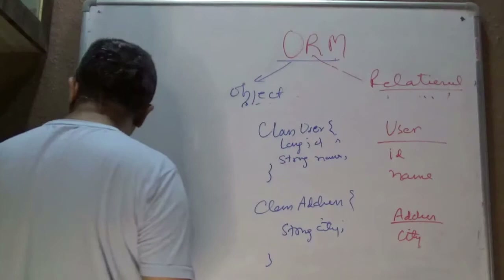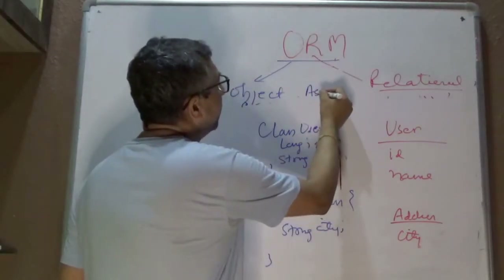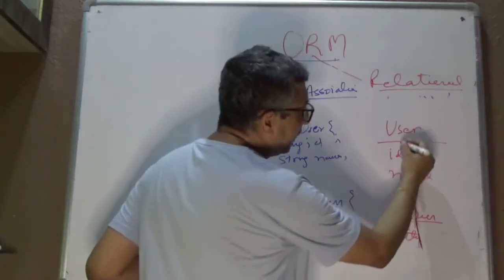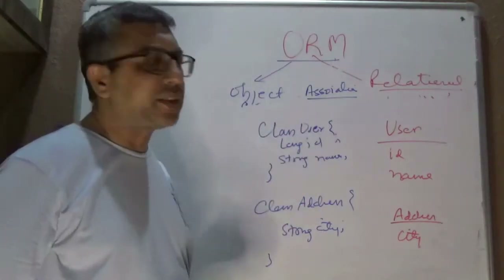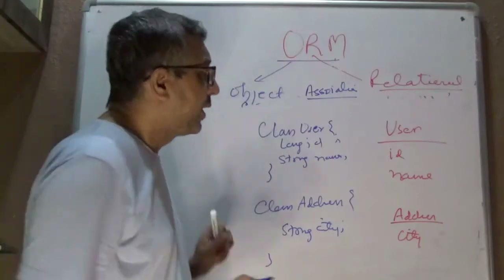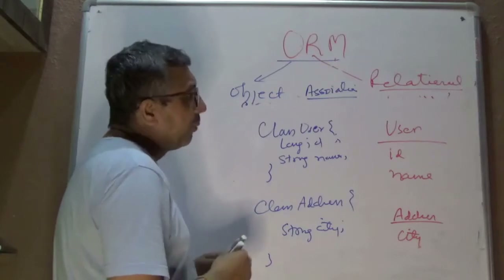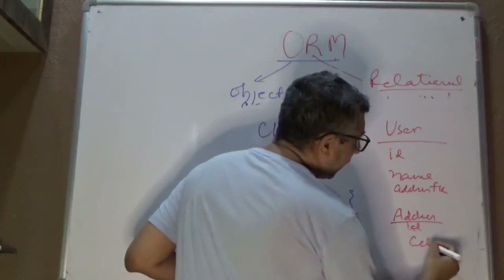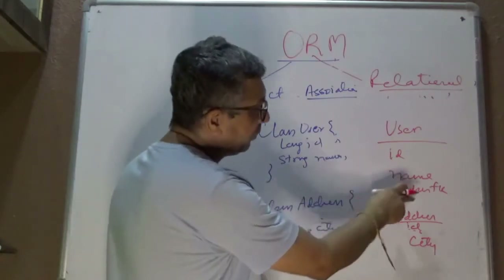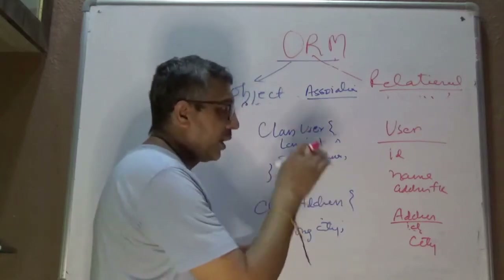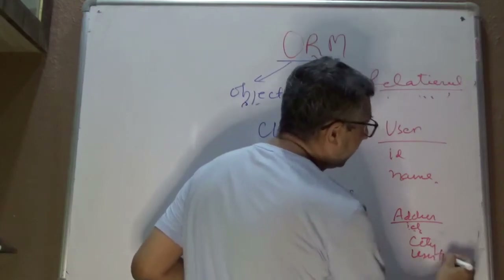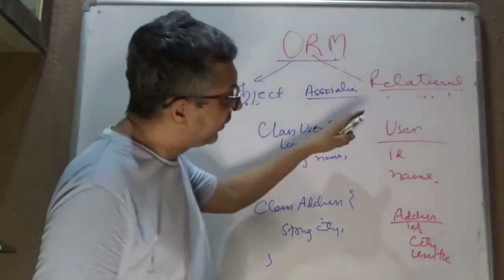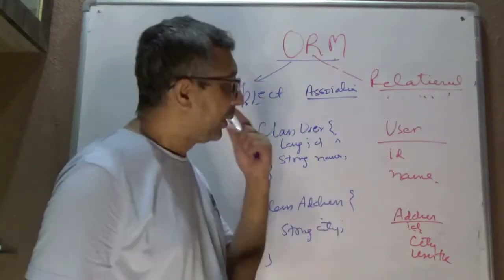Now let's talk about association. We broke User and Address, but we still need a relationship. For a one-to-one relationship, you can either put an address FK in the user table or a user FK in the address table. Whether you put it here or there, you can reach both — it's a matter of how you write the query. There is no notion of directionality on the relational side.